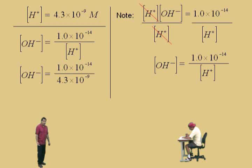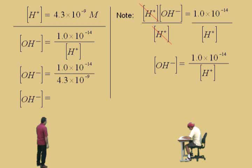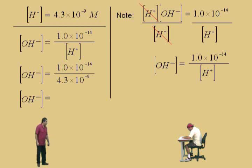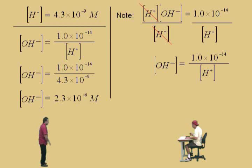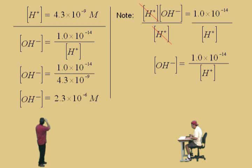Go ahead and get your calculator out, Charlie — get to work and tell me what you get. In scientific notation, you should get 2.3 times 10 to the negative 6 molarity for your hydroxide ion concentration. We were given the hydrogen ion concentration and used the ion product constant for water to get the hydroxide ion concentration.